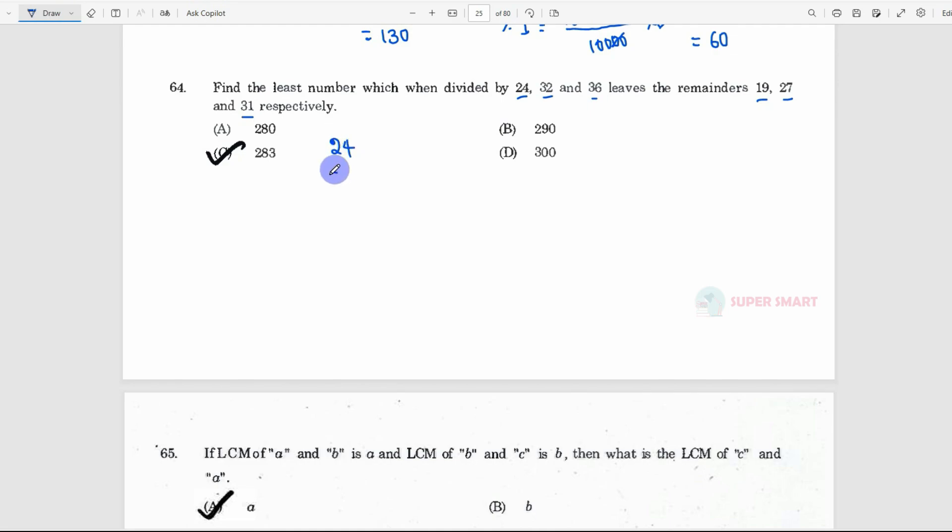24, 32, 36. We have to do this number first minus. When we divide, the remainder is 19. 32 is there, 36 is there, so respectively. When we divide: 24 minus 19 is 5, 32 minus 27, again 5, 36 minus 31, again 5. Same number is coming to your difference.